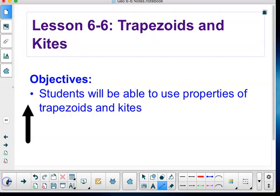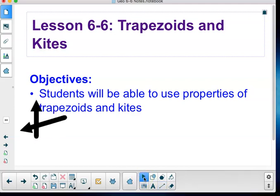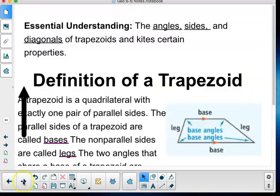Okay, so our objective, students. I'm putting arrows all over the place showing you what direction to go. Students will be able to use properties of trapezoids and kites.